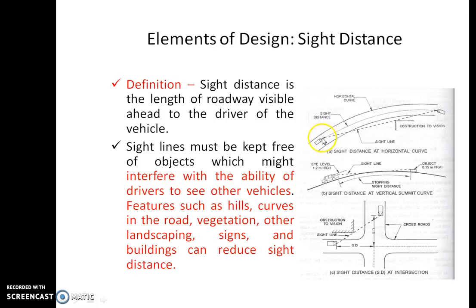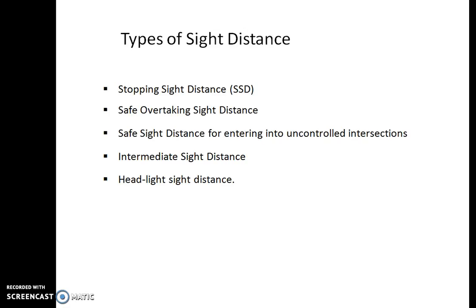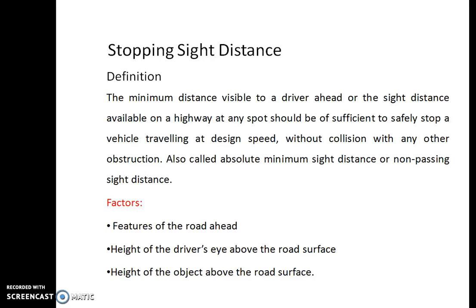So finally, what is sight distance? It is the length of road visible ahead to the driver of the vehicle. The types of sight distance are: stopping sight distance or non-passing sight distance, safe overtaking sight distance, safe distance for entering into uncontrolled intersections, intermediate sight distance, and headlight sight distance. Today we will discuss stopping sight distance.